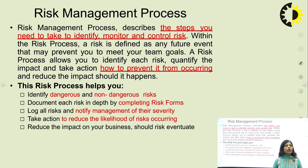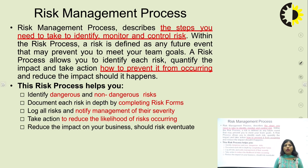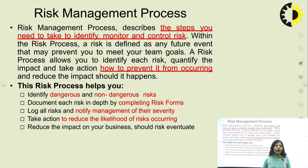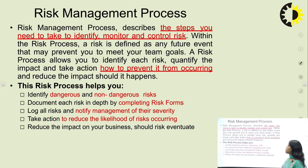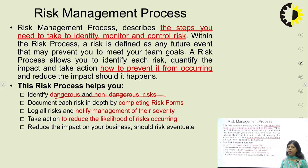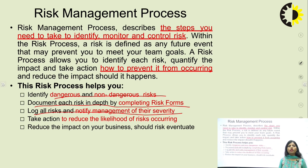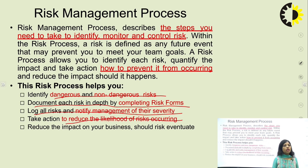The risk management process describes the steps needed to identify, monitor, and control risk. Within the risk process, risk is defined as any future event that may prevent you from meeting your team goals. A risk process allows you to identify each risk, quantify the impact, and take action to prevent it from occurring and reduce the impact should it happen. The risk process helps identify dangerous and non-dangerous risk, document each risk in depth by completing risk forms, log all risks, notify management of their severity, and take actions to reduce the likelihood of risk occurring and its impact on the business.